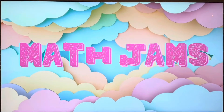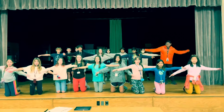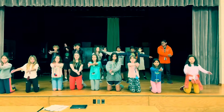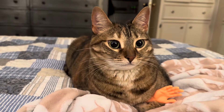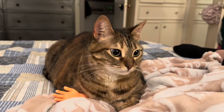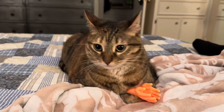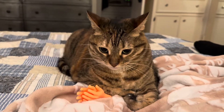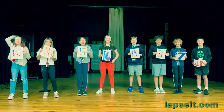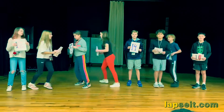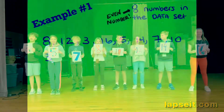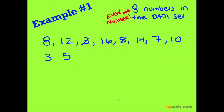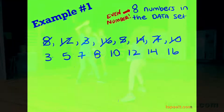Math Jams. Greatest. Least. The middle, the middle, the middle. The greatest. The least. The middle, the middle, the middle. Let me show you how it's done. Put your numbers in order from least to greatest. Put your numbers in order — it won't work if you don't. Put your numbers in order. Go do that now.